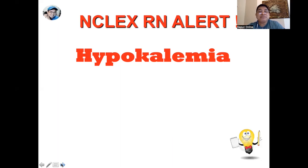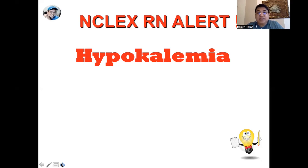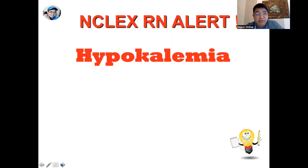Hypokalemia means low potassium levels. The normal is 3.5 to 5.3, but the test will provide those values, so what you need to do is interconnect the information provided. For example, if the patient has diabetes insipidus or diabetes mellitus, the patient will likely have hypokalemia. When you see a low potassium level, ask the patient if they are suffering from diabetes mellitus, diabetes insipidus, diarrhea, vomiting associated with bulimia, alcoholism, or chronic kidney disease.